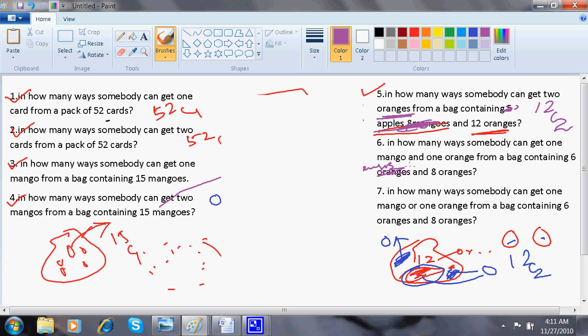In how many ways somebody can get one mango from six mangoes? It's definitely six. Think only mangoes in a bag and you're picking up mangoes. So there are six chances. Eight oranges. How many oranges I want to get? Is again one orange. So there are eight chances.